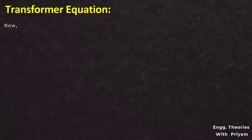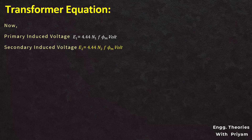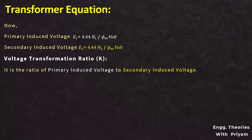According to our previous lecture, the primary induced voltage E1 is equal to 4.44 into N1 into frequency f into maximum flux φm, and the induced voltage in the secondary E2 is equal to 4.44 into N2 into frequency f into maximum flux φm. The voltage transformation ratio is E1 by E2, which equals N1 by N2, equals I2 by I1, equals V2 by V1, and this is equal to k, the voltage transformation ratio.